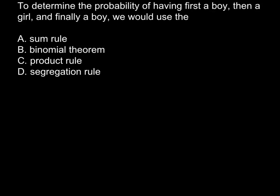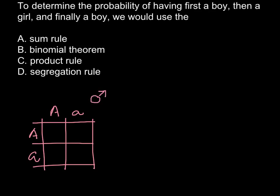I would start with answer D, rule of segregation. We use this whenever we can also solve a problem using a Punnett square. For example, imagine these are two parents, and capital A stands for the red color, small a stands for the white color. This is the male parent and this is the female parent.